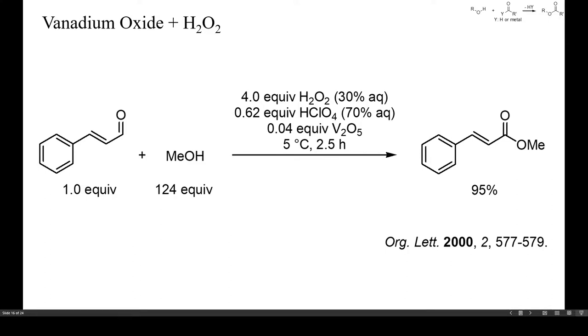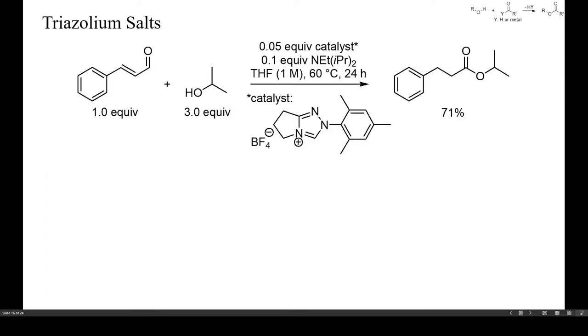If no oxidants are added, enals such as cinnamaldehyde may react with alcohols to yield saturated esters, as in the next example. Here, the oxidant was the olefin, and the reaction was a double-bond isomerization.